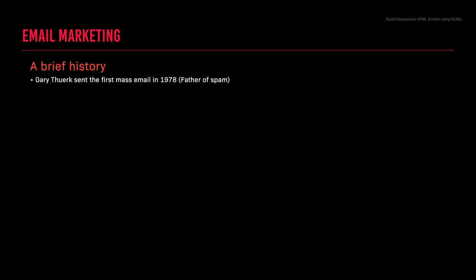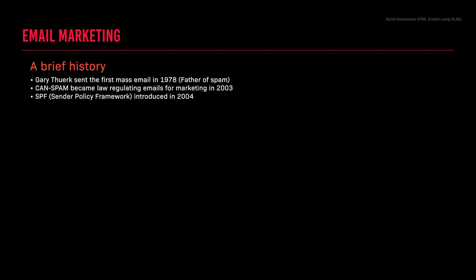Gary Thuerk sent the first mass email in 1978, with the purpose of selling DEC machines (computer hardware), and this campaign proved to be very successful. Because of this, Thuerk is also known as the father of spam. With the rise of spam, regulation was needed: in 2003 CAN-SPAM was introduced in the United States, in 2004 Sender Policy Framework (SPF) was introduced allowing for email validation, and in 2018 in the European Union, GDPR came into effect making consent for EU-based people stricter. Despite regulation, email marketing is still very effective.